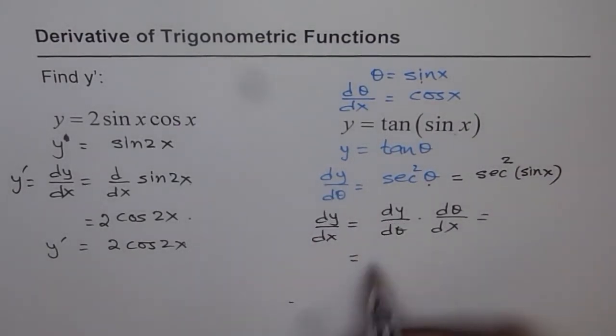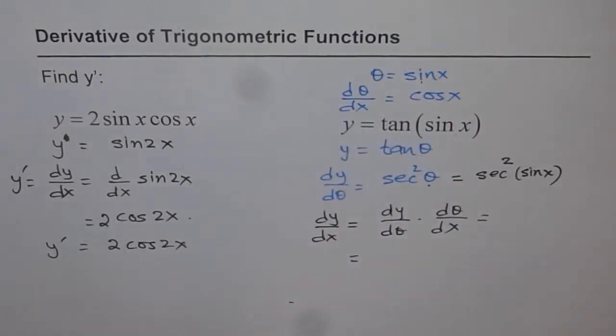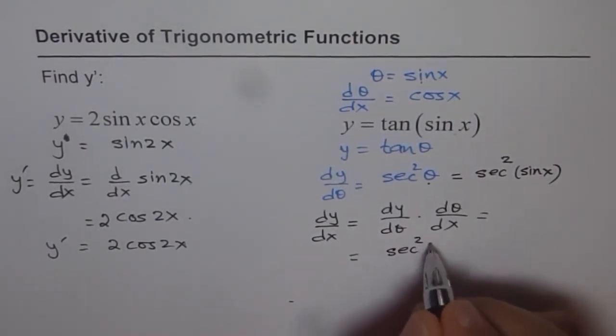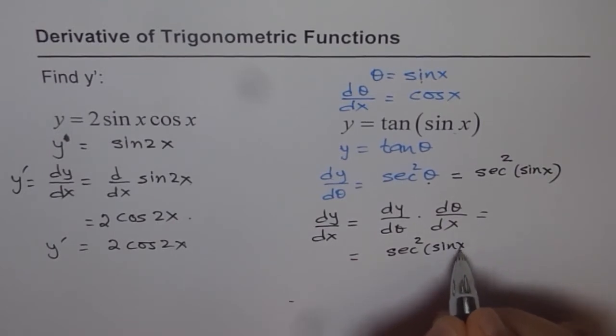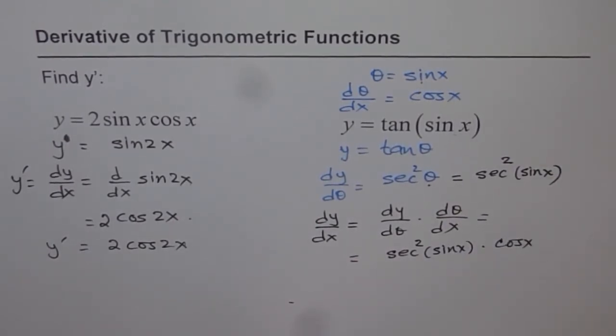So that is dy d theta. And what is d theta dx? It is cos x, correct? So that is the answer we get. So we can now write down the answer as secant square sin x times cos x. I hope you understand.